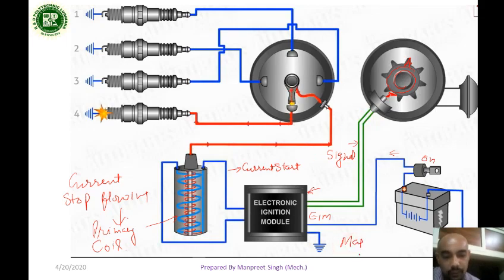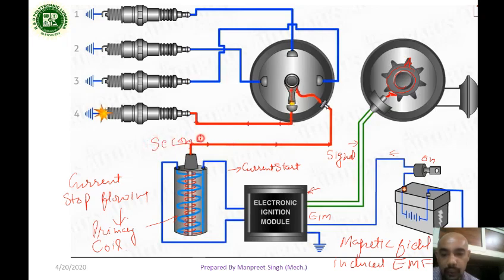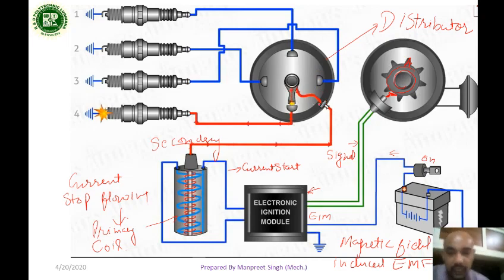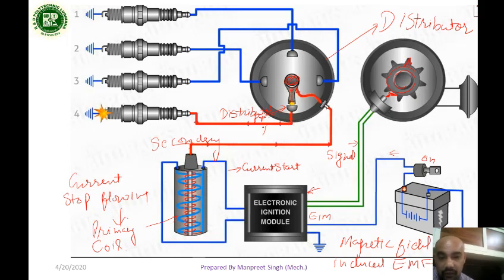Then the magnetic field is created, and an induced EMF is created. When the current flow starts, the current flow becomes maximum. The current flow is then distributed via the rotating arm to the distributor points.